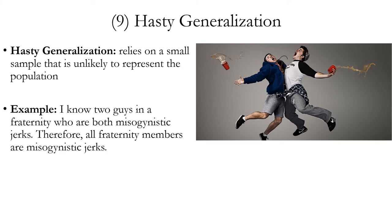Now, just because you have a small sample of two guys who are misogynistic jerks, this does increase the probability of the conclusion — two examples are better than no examples. However, this is still too small of a sample to be reasonably sure the conclusion is true. Also, it can be difficult to make universal generalizations about people. People, like other organisms or complex systems, have a lot of variability.